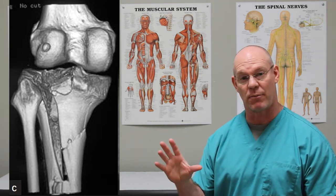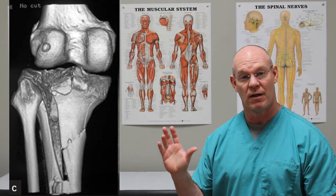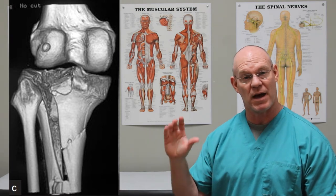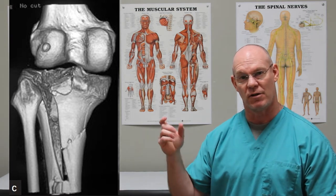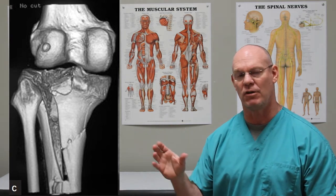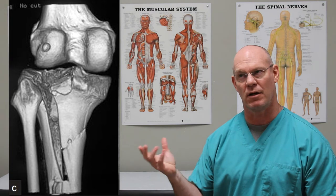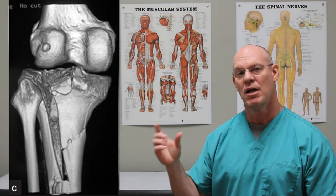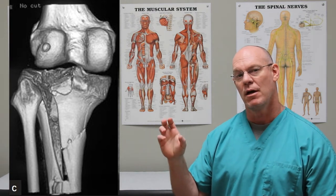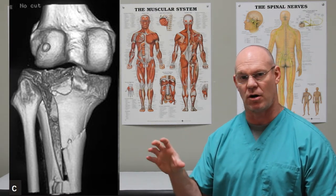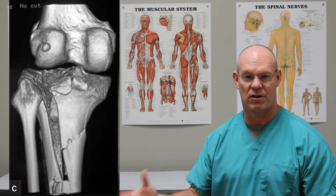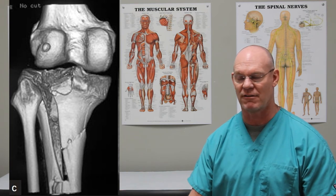This is actually looking at the back part of the tibia and the posterior part of the distal femur. But you can see — well, at least if you're me — you can see how many little pieces there are to that articular surface.